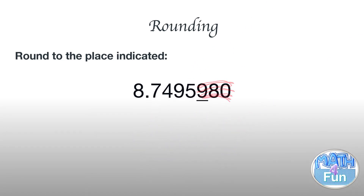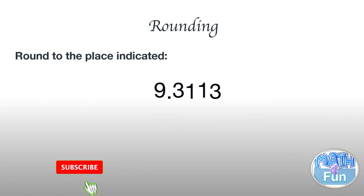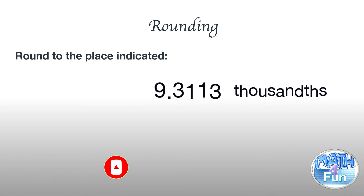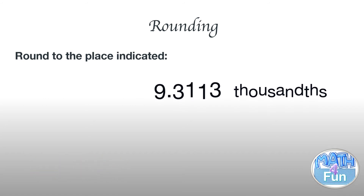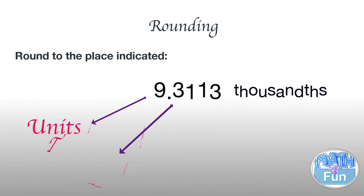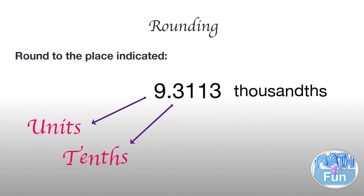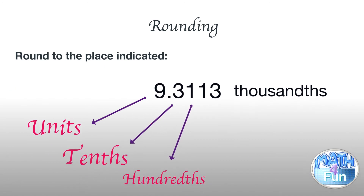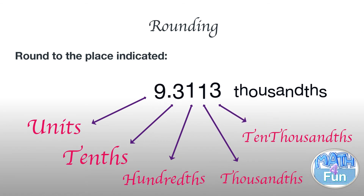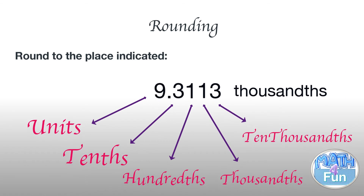Here we have 9.3113 and we need to round to the nearest thousandth. Let's review the place values after the decimal: the first digit after the decimal is the tenths place, the second is the hundredths place, the third is the thousandths place, and the fourth is the ten-thousandths place.